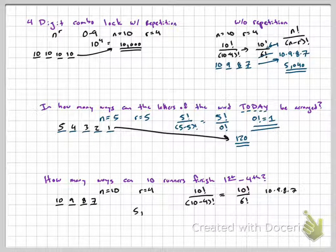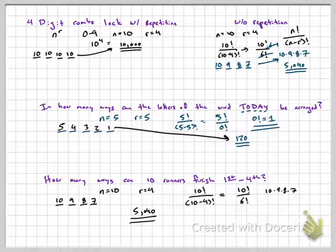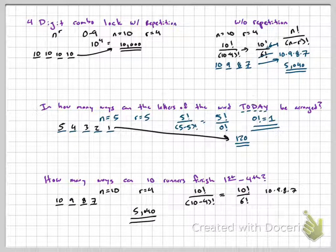So again, 5,040 different ways that runners can come in 1st through 4th. And we don't care about anything after 4th place.